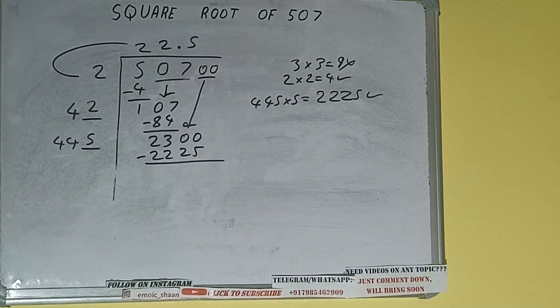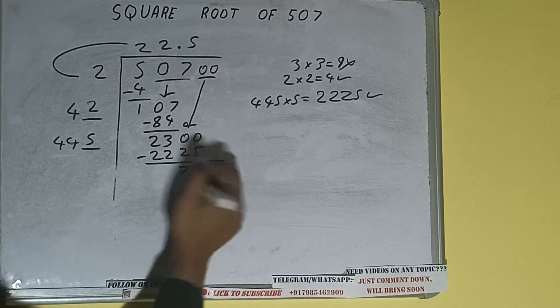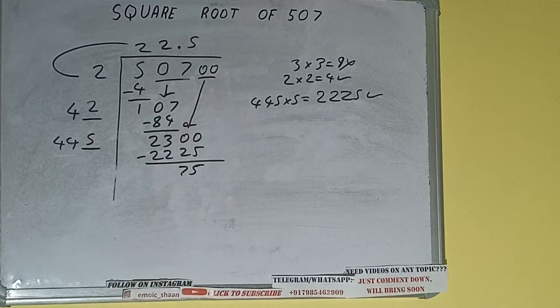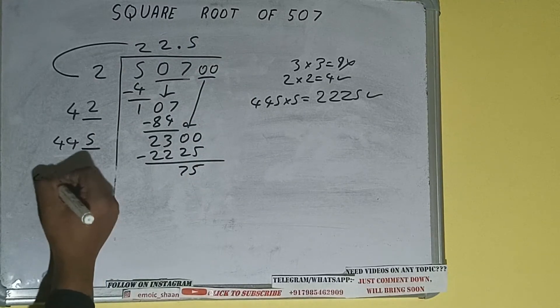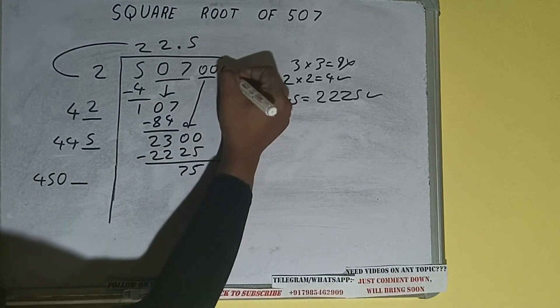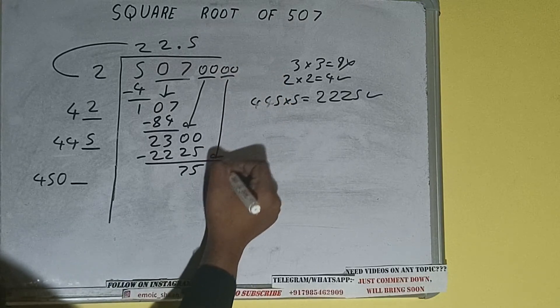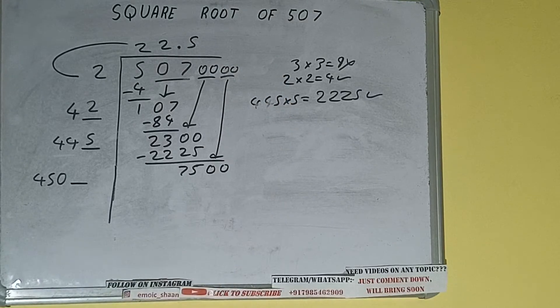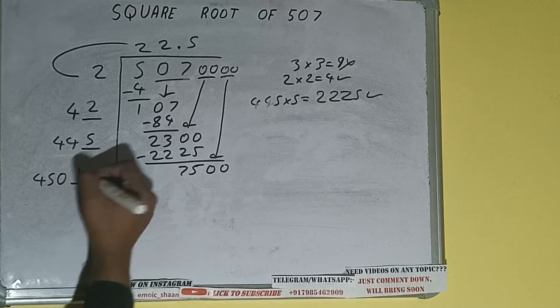And we'll be having 75. Now 445 times 5 we did, so add both. So 445 plus 5 will be 450 and 1 digit extra. And this number we need to make it big. So bring the next pair of zeros down and it will be 7500.